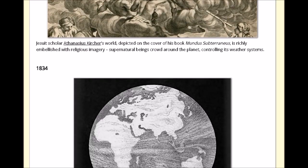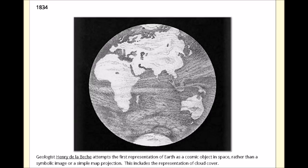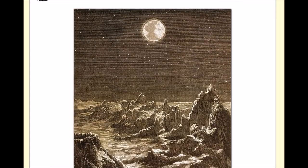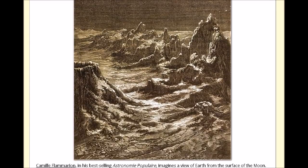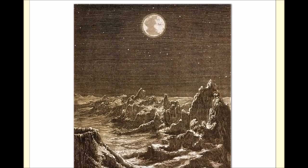And then 1834 — this one's also interesting. A geologist attempts the first representation of earth as a cosmic object in space. That looks pretty good. It looks like the stuff that NASA uses, so they probably just took his 1834 image and turned that into the blue marble. And then in 1880, we have this image of the earth — this is actually the earth rise from the moon. It's so interesting how they program this stuff in the 1880s, and then what do we get from NASA but the earth rise from the moon, when they act like they're actually doing it.